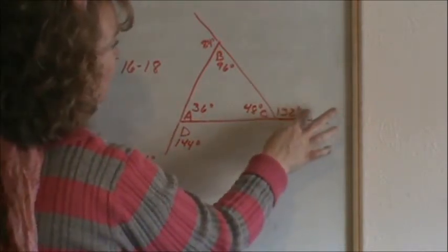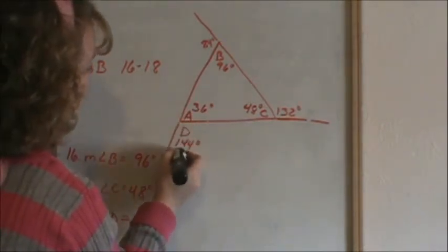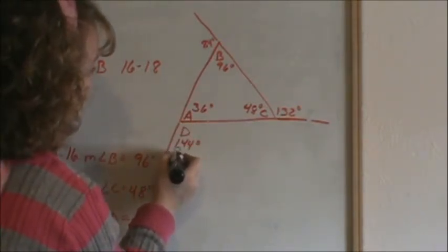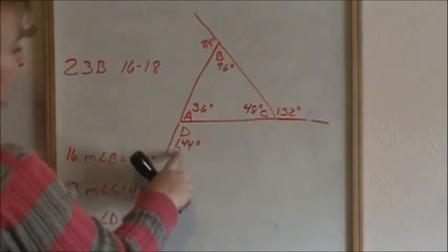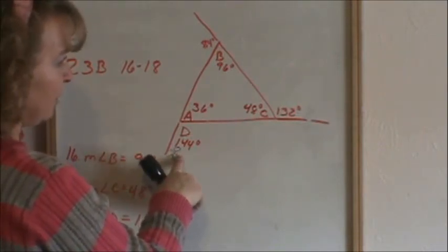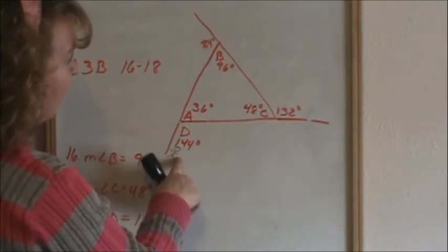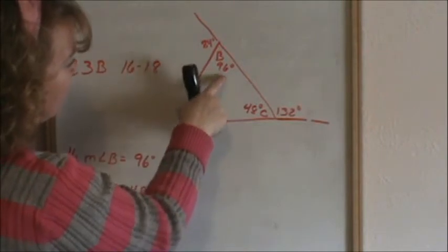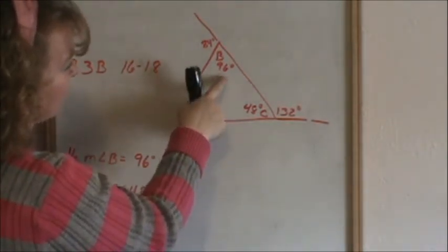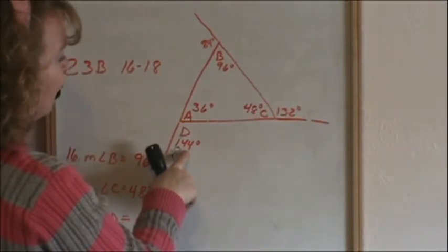Let's say I'm standing over here at 144 degrees. From the perspective of standing at this exterior angle, you're always going to be standing at an exterior angle. The inside angles that are furthest from me are 96 and 48. So 96 and 48 should add up to equal 144, and it does.